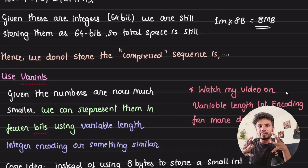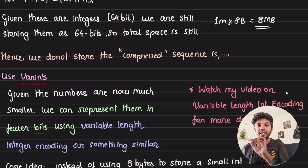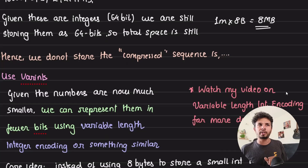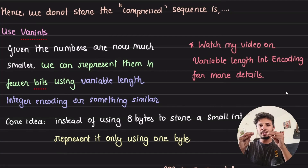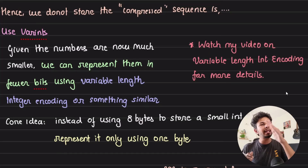Instead of storing integers as fixed-width integers, we encode them using variable-length integer encoding. I have a detailed video on this topic — check it out — but here's a quick overview. Variable-length integer encoding lets you encode integers with variable length, so you're not giving a fixed width of 4 or 8 bytes to every integer.